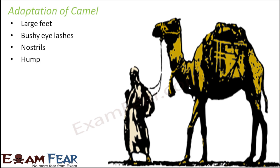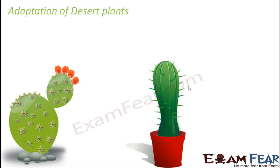Camels have a hump used to store water, which can be used for future use since deserts generally have a scarcity of water. They also have a thick coat which helps them overcome the cold nights in the desert.